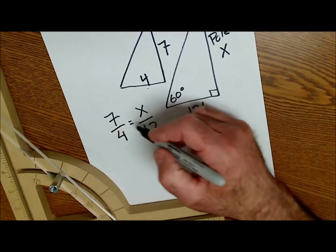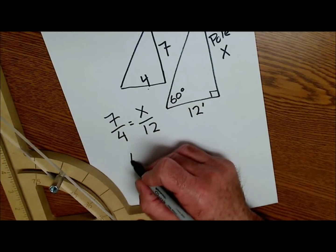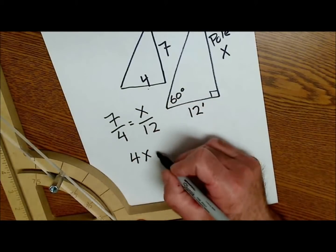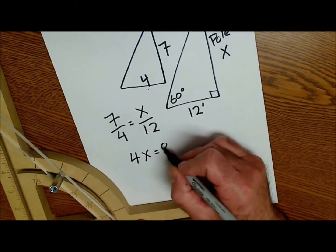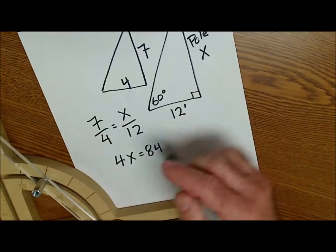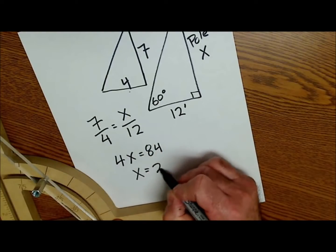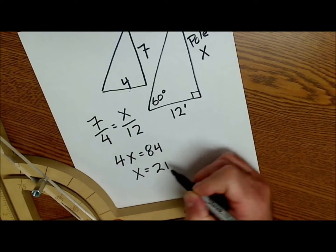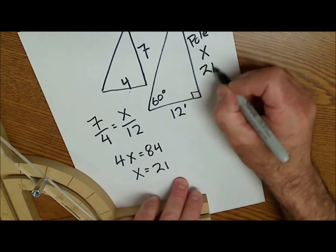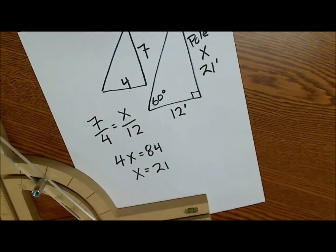I have one ratio equal to another, so I cross multiply: 4x is equal to 84. Divide both sides by 4 and I get x is equal to 21. So I can find the height of that pole to be 21 feet if I'm 12 feet away at an angle of 60 degrees.